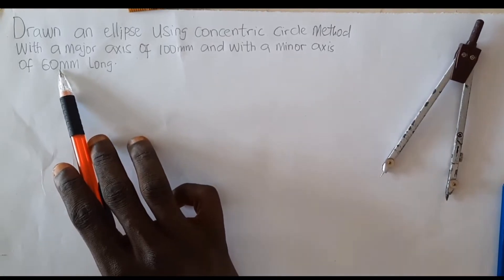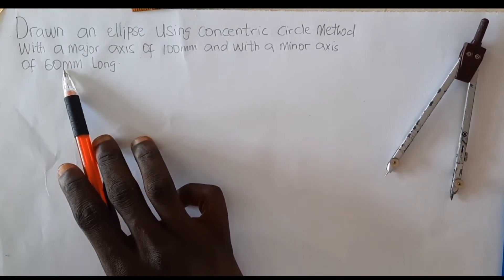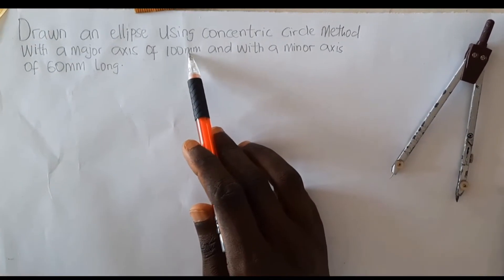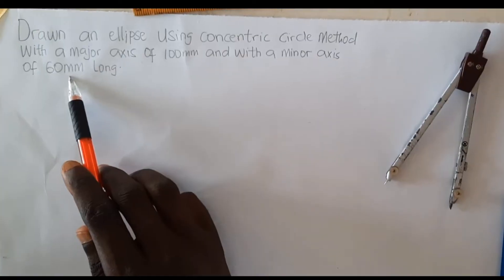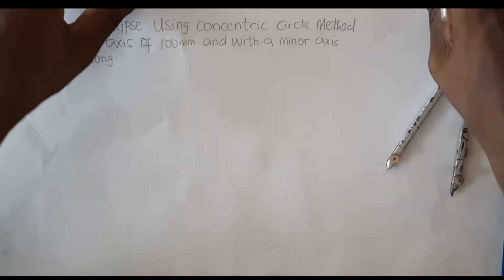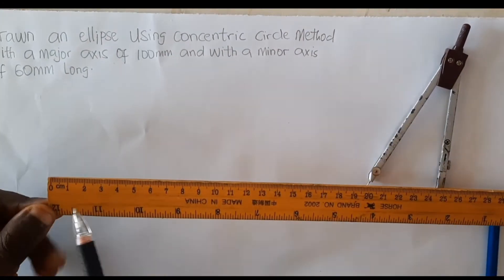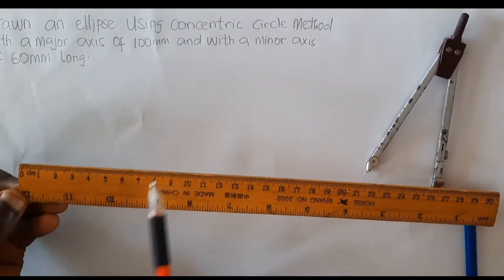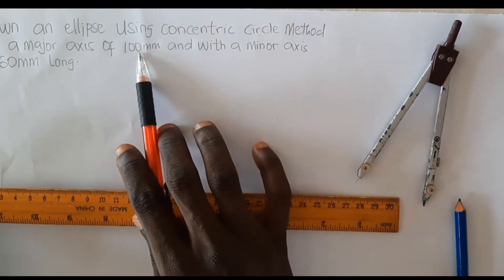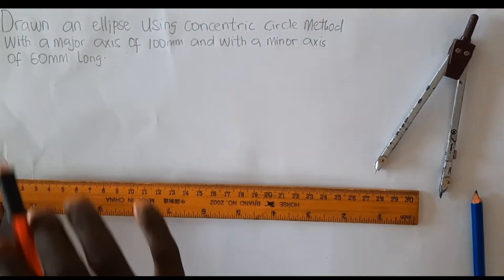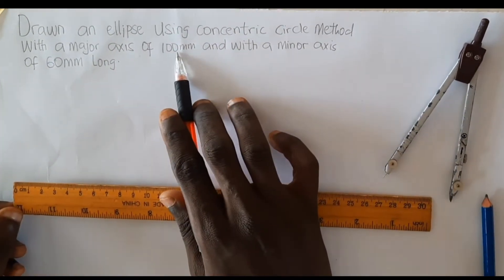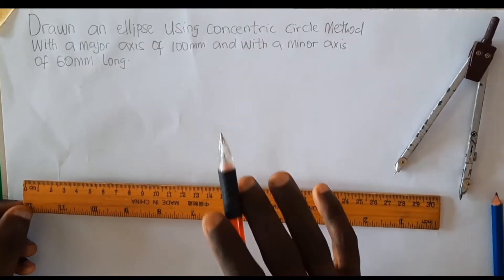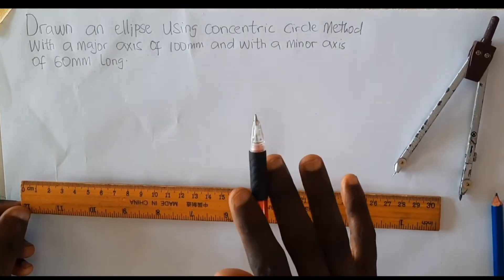The 100 millimeter here is the diameter of the major axis while the 60 millimeter is the diameter of the minor axis. So I will draw two circles — one with a diameter of 100 millimeter and the other with a diameter of 60 millimeter. My ruler is calibrated in centimeters, so I will need to convert these millimeter values to centimeters. If I convert 100 millimeters to centimeters, I divide by 10, and that gives me 10 centimeters.